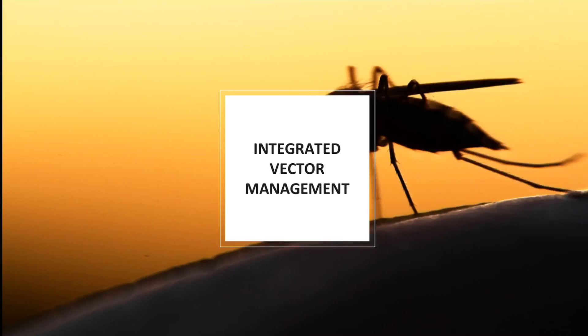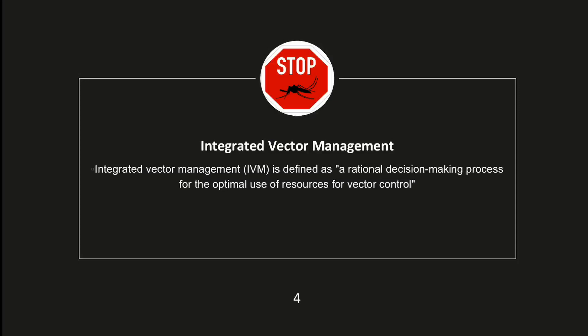Integrated Vector Management is defined as a rational decision-making process for the optimal use of resources for vector control. The approach seeks to improve efficacy, cost-effectiveness, ecological soundness and sustainability of disease vector control. The ultimate goal is to prevent the transmission of vector-borne diseases such as malaria, dengue, Japanese encephalitis, Leishmaniasis, Schistosomiasis and Chagas disease.